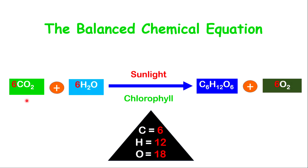Let's make a quick check. On this side we have 6 carbon, and on this side we also have 6 carbon — so a total of 6 carbon on both sides. The total number of hydrogen will be 6 times 2, which is 12, and on this side it is also 12. The number of oxygen will be 6 times 2, which is 12, plus 6 times 1, which is 6, giving a total of 18 on the reactant side. On the product side, it is 6 plus 6 times 2, which is 12, also giving 18 oxygen. Hence the equation is balanced.